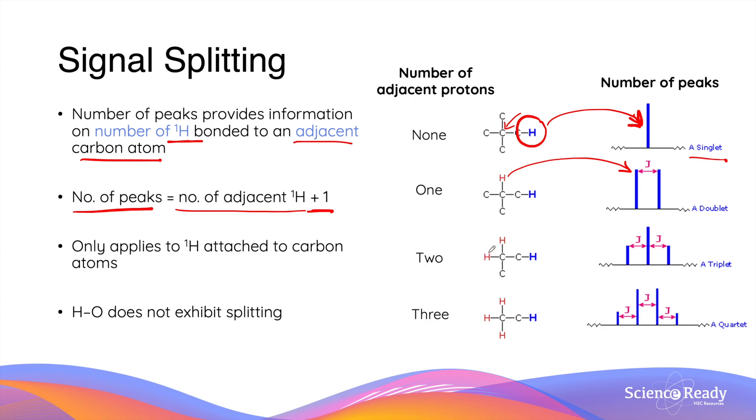If a second carbon atom on the adjacent carbon is again replaced by another hydrogen, there are now two hydrogen atoms attached to the nearby carbon. This causes a signal for the blue proton to become a triplet.